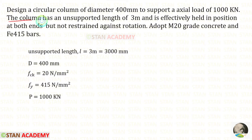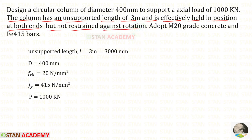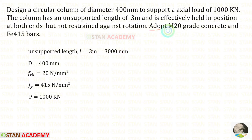The column has an unsupported length of 3 meter and is effectively held in position at both ends but not restrained against rotation. The unsupported length is given as 3 meter, which we convert to 3000 millimeter. We adopt M20 grade concrete and Fe415 bars, so FCK is 20 and FY is 415.